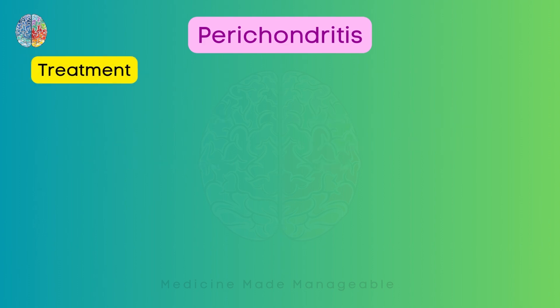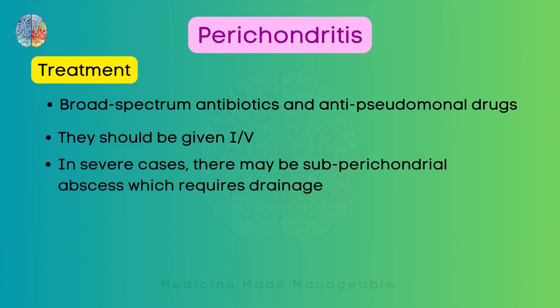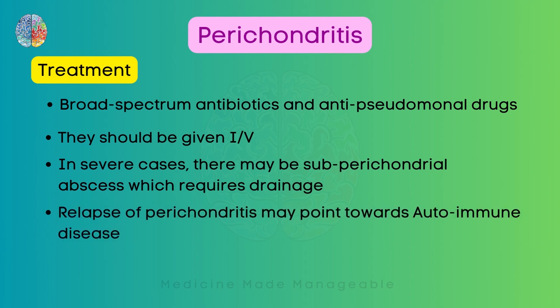Treatment involves broad-spectrum antibiotics. Because Pseudomonas is the most common agent, anti-pseudomonal drugs should be given IV. In severe cases where there is a buildup of fluid, there may be a subperichondrial abscess which requires drainage. Also note that relapse of perichondritis may point towards an autoimmune disease.